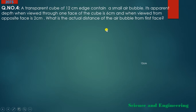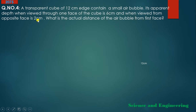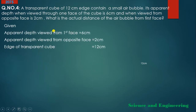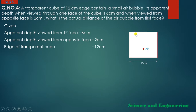The cube has an air bubble inside. Viewed from the first face, apparent depth = 6 cm. Viewed from the opposite face, apparent depth = 2 cm. The total edge of the cube is 12 cm. We need to find the actual position of the air bubble.